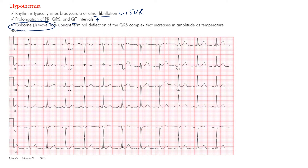You can see the Osborne wave most prominently in V4, V5, and even V6. Notice that tail end occurring at the end of the QRS complex — it's coming at the terminal portion. Remember, delta waves with an accessory pathway come more at the beginning of the QRS. The Osborne or J wave is that positively upright terminal deflection of the QRS complex near the J point in those leads.